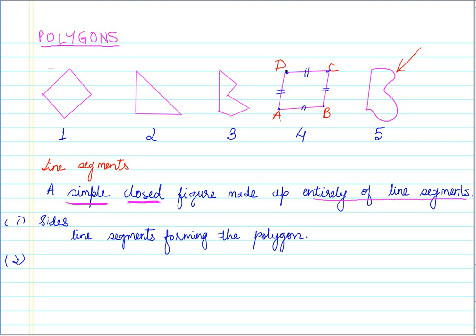So these points where the line segments meet are called vertex, or vertex is the singular word and vertices will be the plural word. So what is a vertex? Vertex is the meeting point of a pair of sides. It is called a vertex.